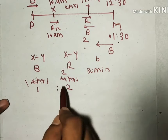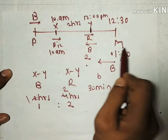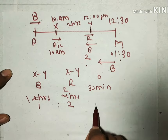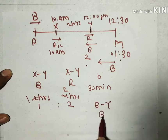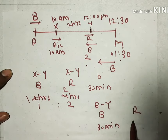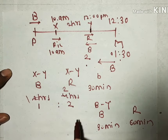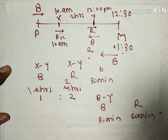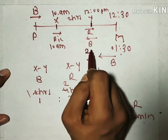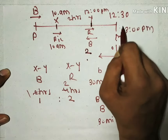Similarly, from Mumbai to Y the bus needs 30 minutes. Since the ratio of bus time to rickshaw time is 1 to 2, the rickshaw will need 60 minutes for the same stretch. The rickshaw is at point Y at 2pm, so after 60 minutes it will reach Mumbai at 3pm. The rickshaw will reach Mumbai at 3pm.